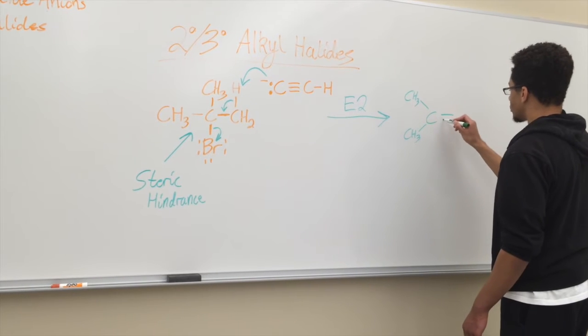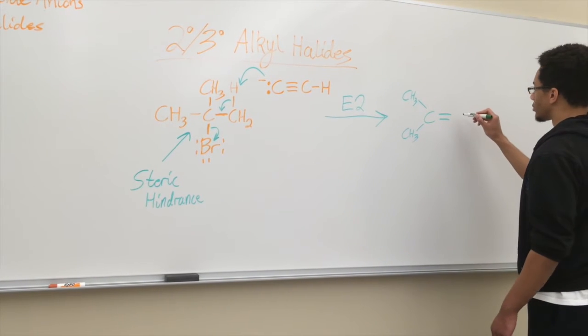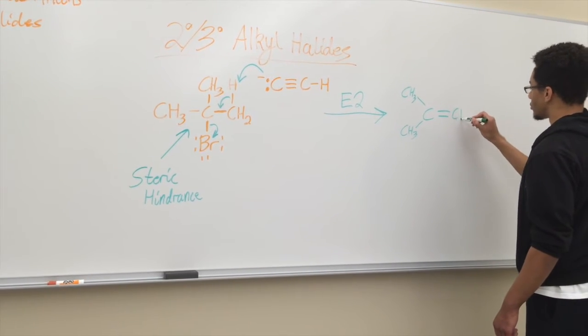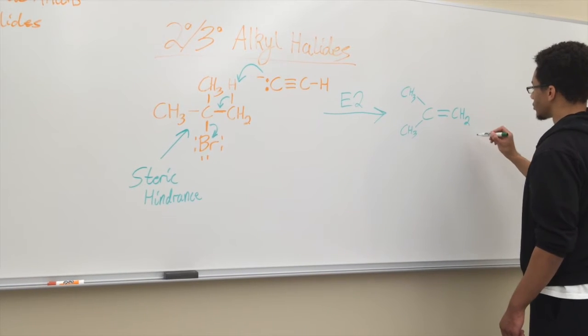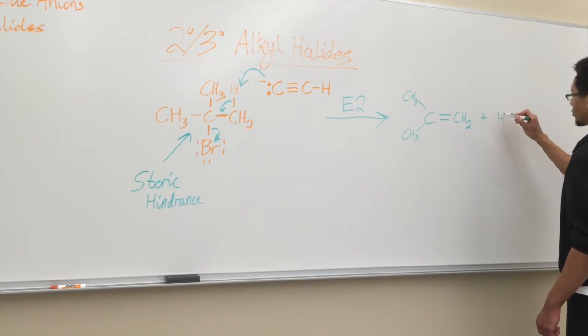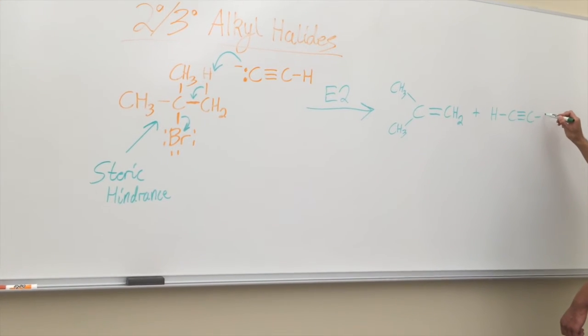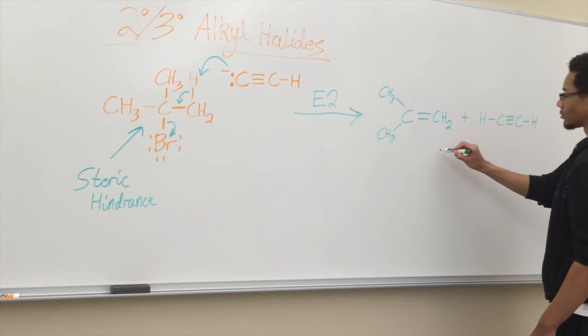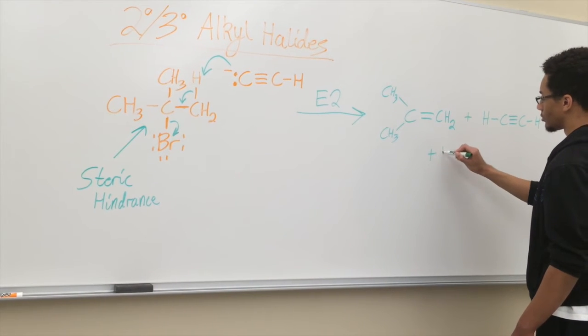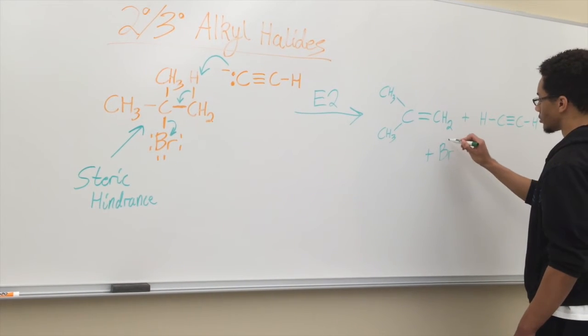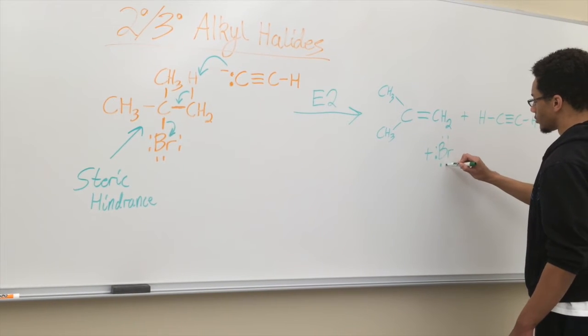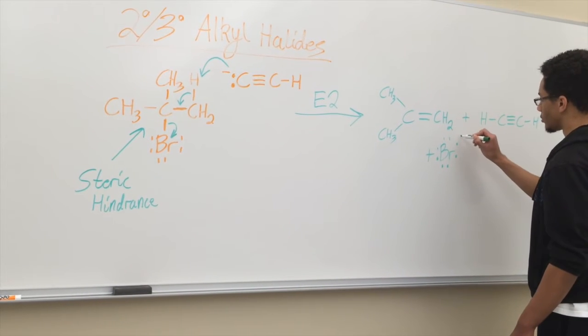The first product is just a simple alkene with the carbon-carbon double bond. Your next product is your terminal alkyne. The terminal alkyne just forms what you would originally have at the beginning. And lastly, you'll get your leaving group. The leaving group will be by itself, depending on what your solvent was.